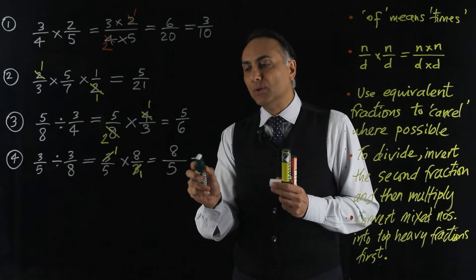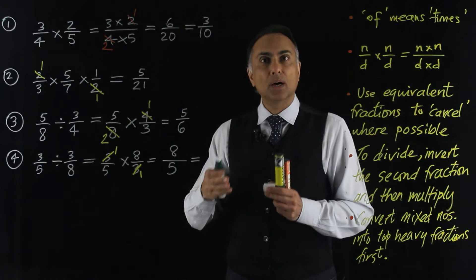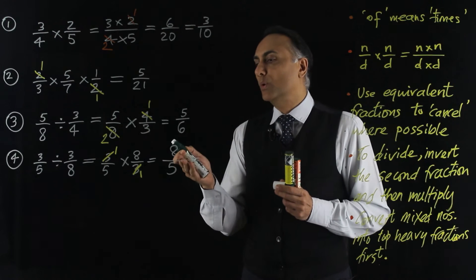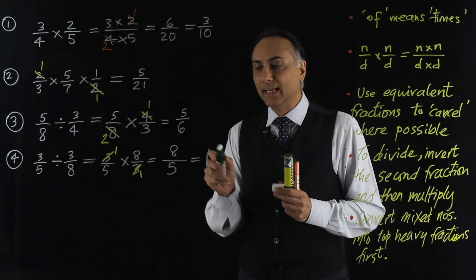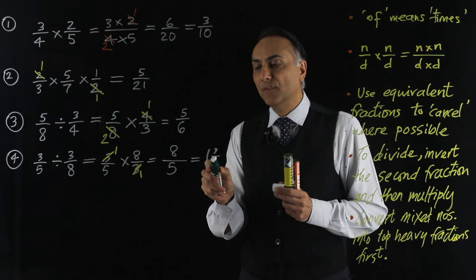And what we normally do is turn it into a mixed number. So 8 fifths would be a whole 1, and then there would be another 3 fifths.